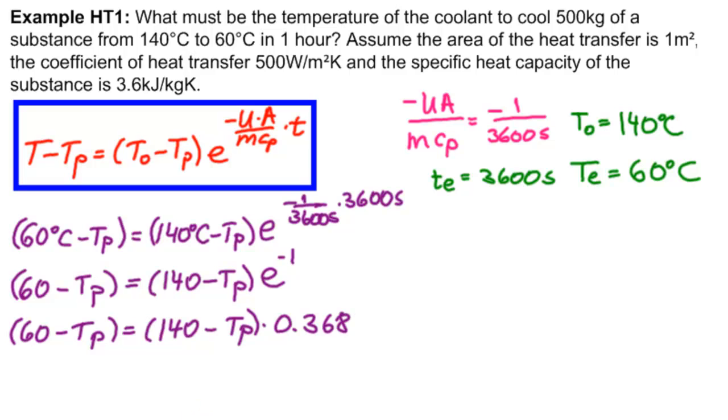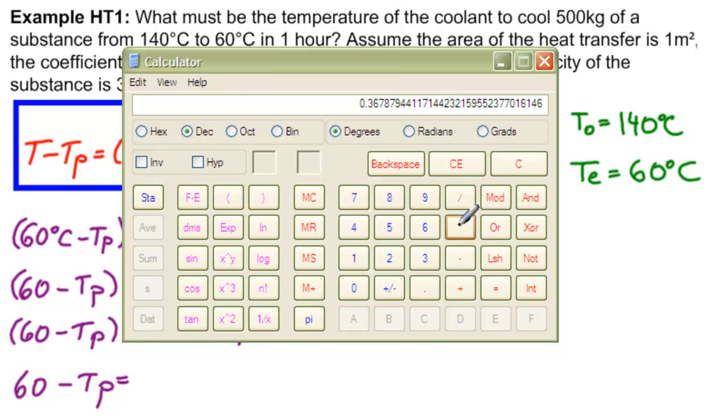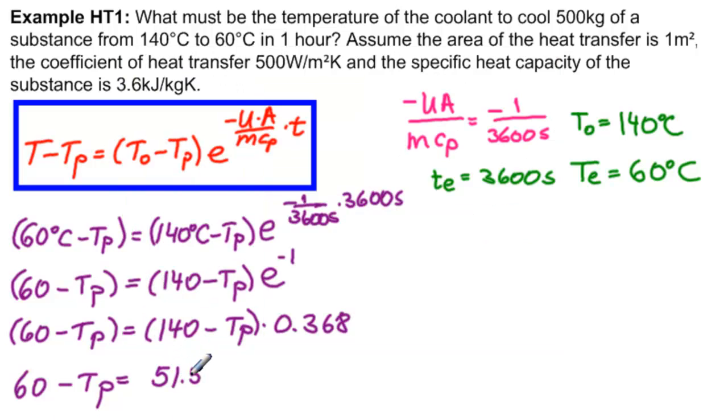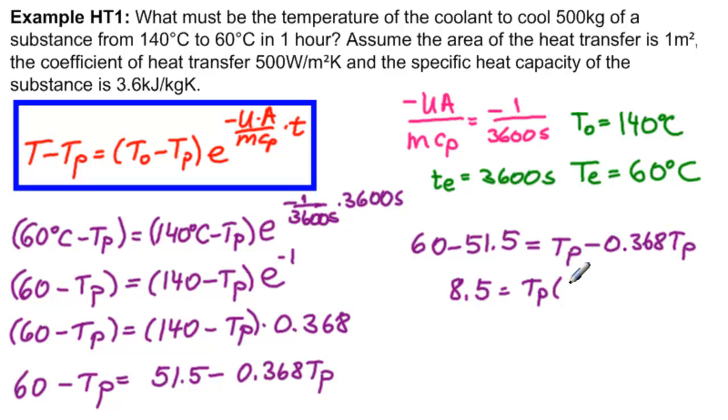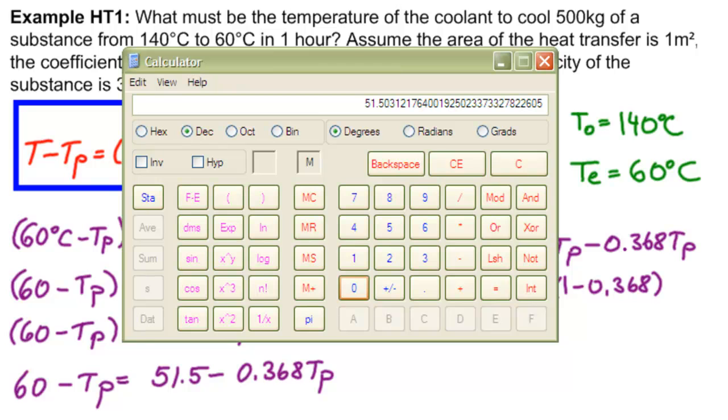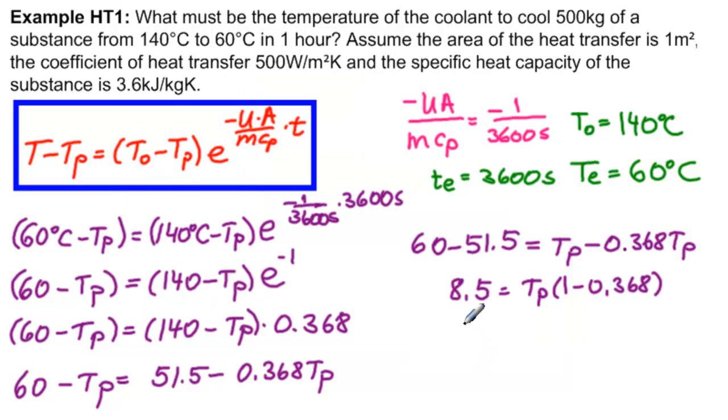Let's clean this up. We have 60 minus TP equals 140 times that, so 140 times 0.368 equals 51.5 minus 0.368 TP. So we have 60 minus 51.5 equals TP minus 0.368 TP. So this is 8.5 equals TP times 1 minus 0.368, which is 0.632.